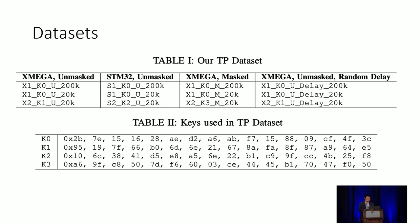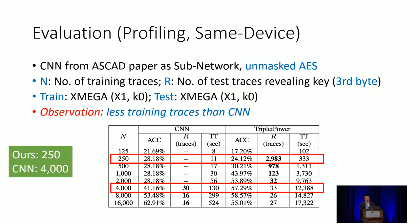For the profiling attack same-device setting, training and testing with XMEGA on exactly the same device, our method needs fewer training traces than CNN. When N equals 250 training traces, our method can successfully recover the key during the attack phase. However, CNN requires at least 4,000 training traces to train a good model. One important note: if you do have a sufficient number of training traces, you should use CNN directly rather than our method, because our method requires longer training time.